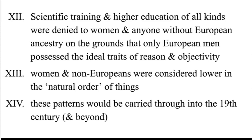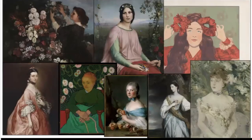As science became the voice of authority and accrued social prestige, medical practitioners used the emerging discourses of natural binaries to exclude women from medical training. Scientific training and higher education of all kinds were denied to women and anyone without European ancestry on the grounds that only European men possessed the ideal traits of reason and objectivity. Women and non-Europeans were considered lower in the natural order of things. These patterns would be carried through into the 19th century and beyond — they still haunt us now.